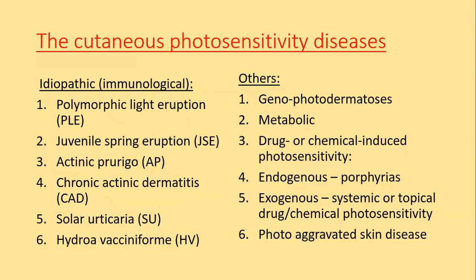Cutaneous photosensitivity diseases may be classified as idiopathic or immunological diseases and others. The idiopathic and immunological diseases include polymorphic light eruption, juvenile spring eruption, actinic prurigo, chronic actinic dermatitis, solar urticaria, and hydroa vacciniforme. Photosensitivity is also seen in genome photodermatoses, several metabolic disorders, drugs or chemical-induced photosensitivity, porphyrias, and exogenous systemic or topical drugs or chemicals.